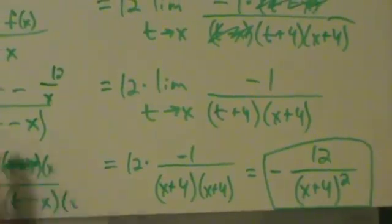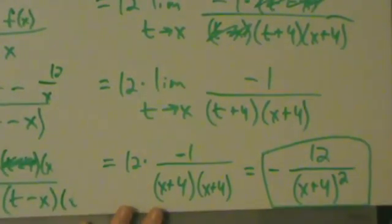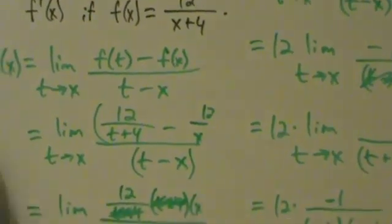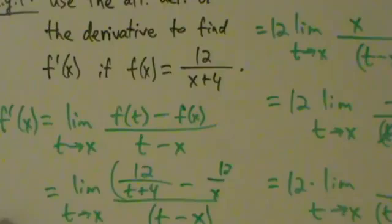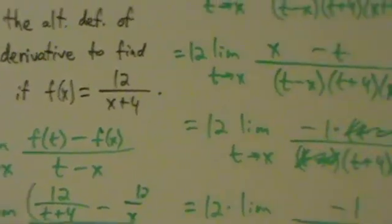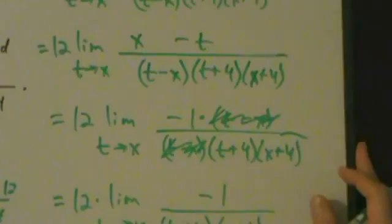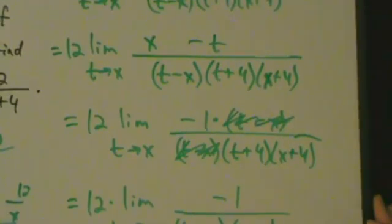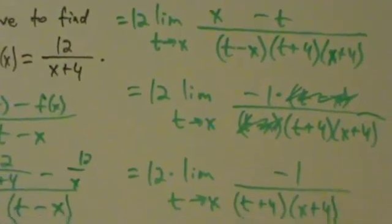Whether or not this is simpler than using the original definition is a matter of personal opinion. But I think it might be a little better because here we just had t plus 4 instead of x plus h plus 4. For this particular function it's not a big deal, but if you have something messier this might be better to work with. The only tricky part is remembering that x minus t equals negative 1 times the quantity t minus x. The more you do it, the easier it will be to recognize when you need to do that — it just takes practice.